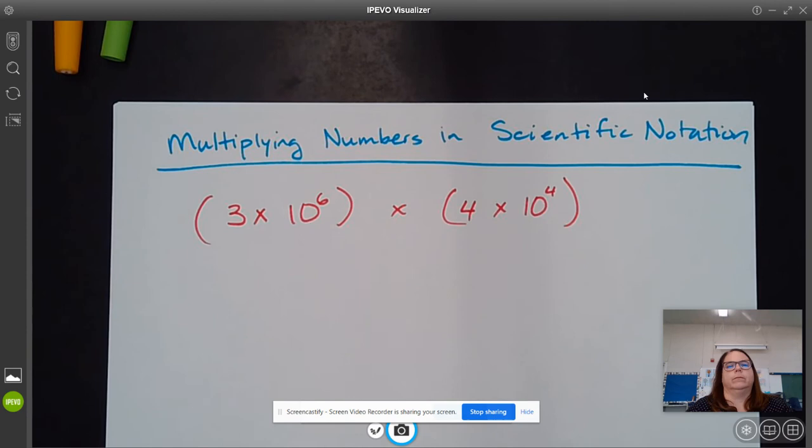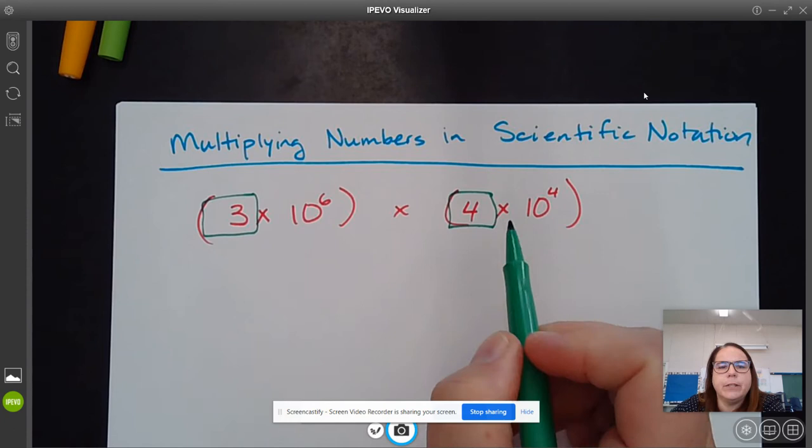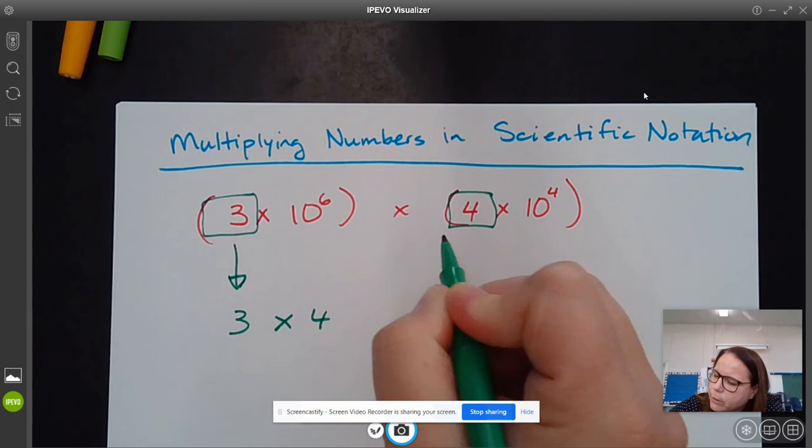So the way to multiply in scientific notation is to then just take these values and rewrite them in a different order. What we're going to do is take the number that's being multiplied by the power of 10, and we're going to multiply those over here, so we're just going to move them to the front, and then we're going to multiply them.